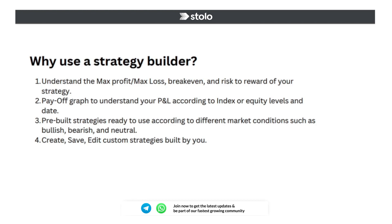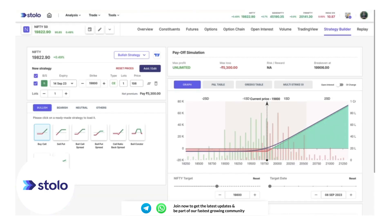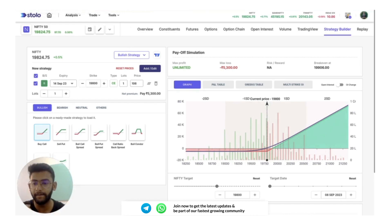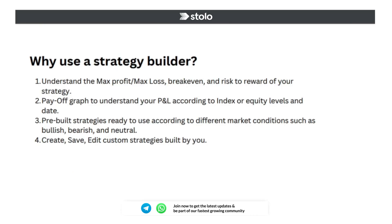The strategy builder also gives you an interactive payoff graph. This helps you understand your PnL according to the expiry date or days before expiry, as well as price levels. For example, Nifty at 18,600 or 19,600 — at that specific level and date you can understand exactly how much profit or loss you can make.